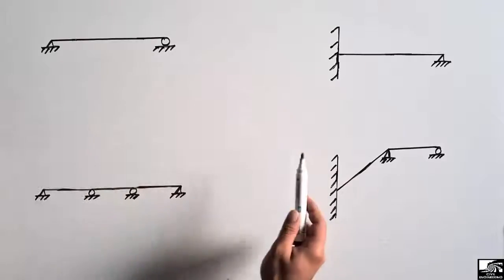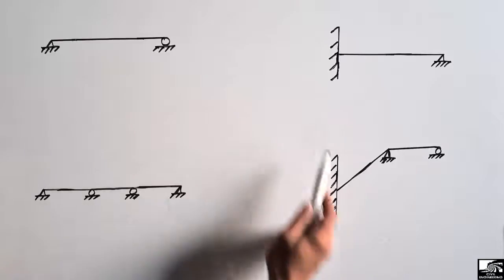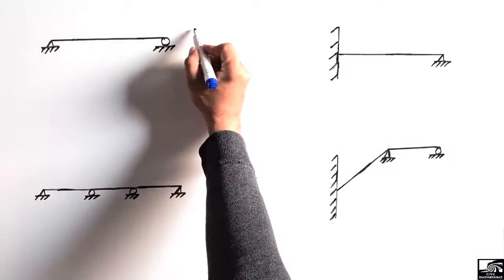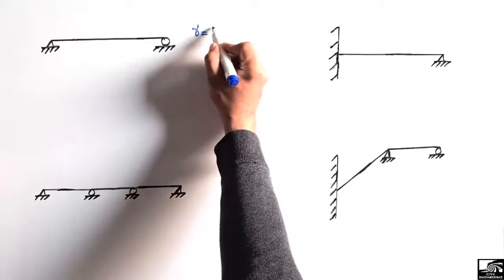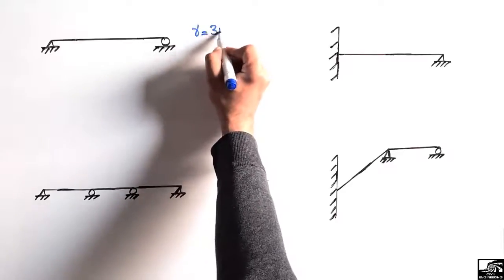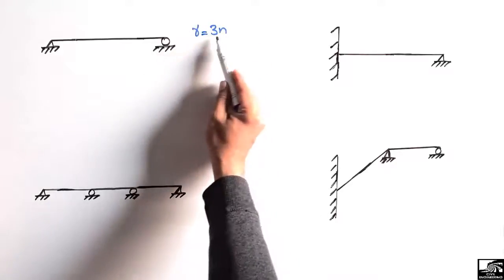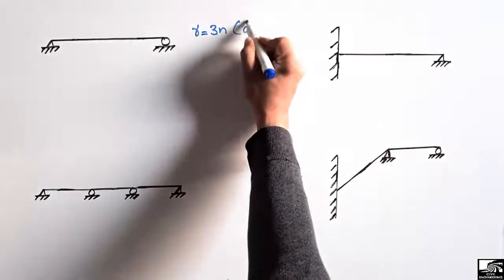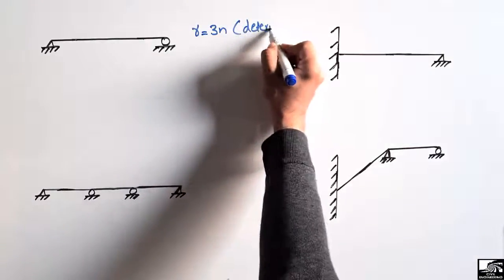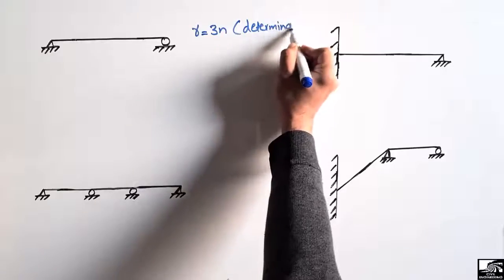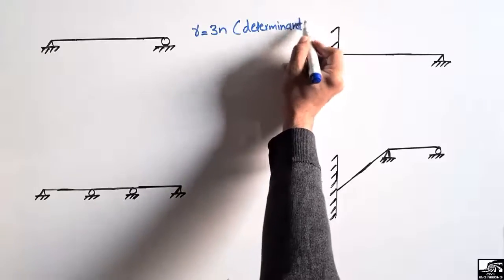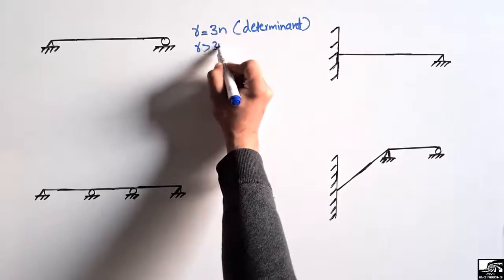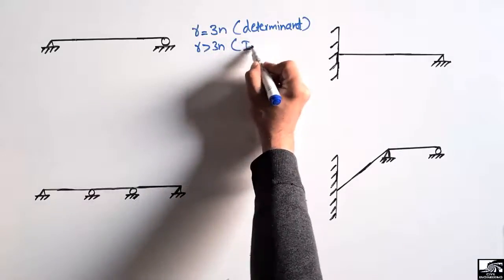We are going to find out the determinacy for the following types of beams. If R is equal to 3n, then the beam is a determinant beam. If R is greater than 3n, it will be an indeterminate beam.